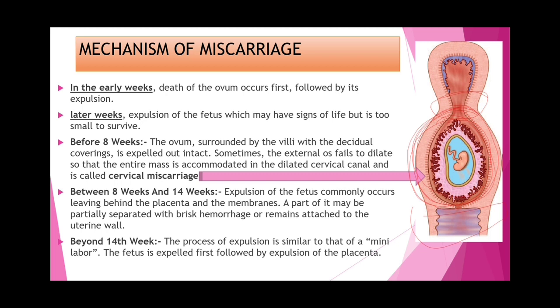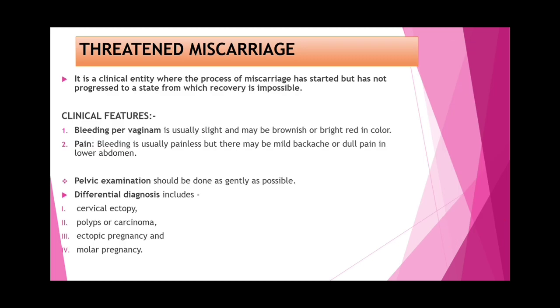Between 8 and 14 weeks, expulsion of the fetus commonly occurs leaving behind the placenta and membranes. Beyond 14 weeks, the process of expulsion is similar to a miniature labor. Threatened miscarriage is clinically where the process of miscarriage has started but has not progressed to the state from which recovery is impossible — meaning recovery is still possible.